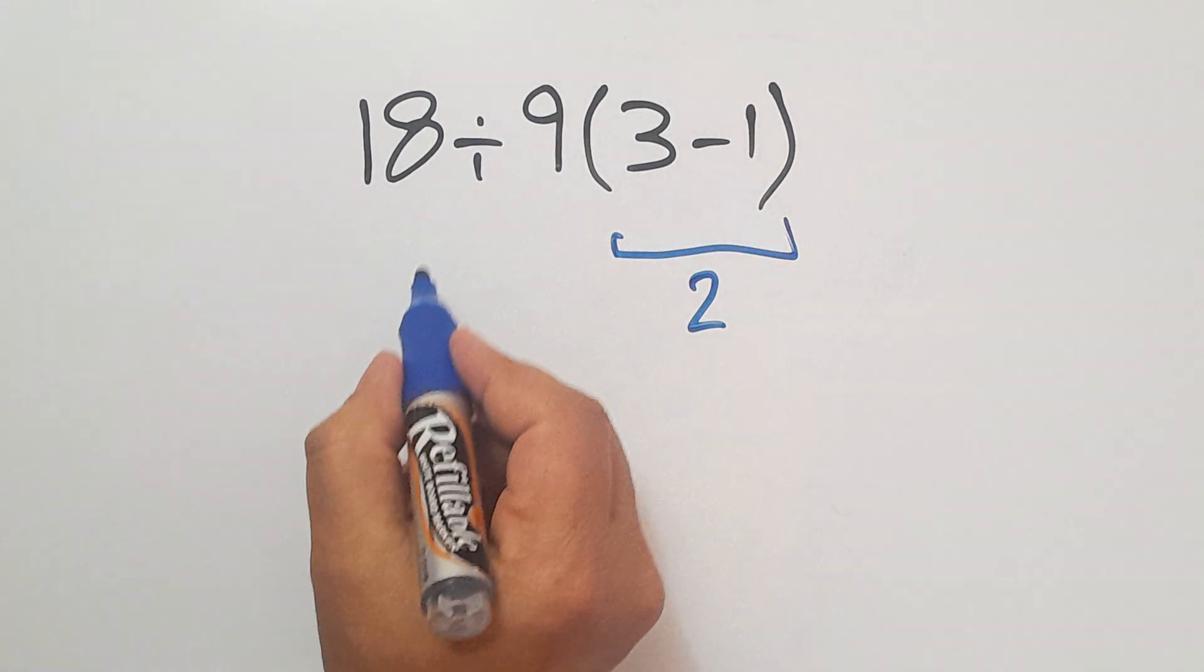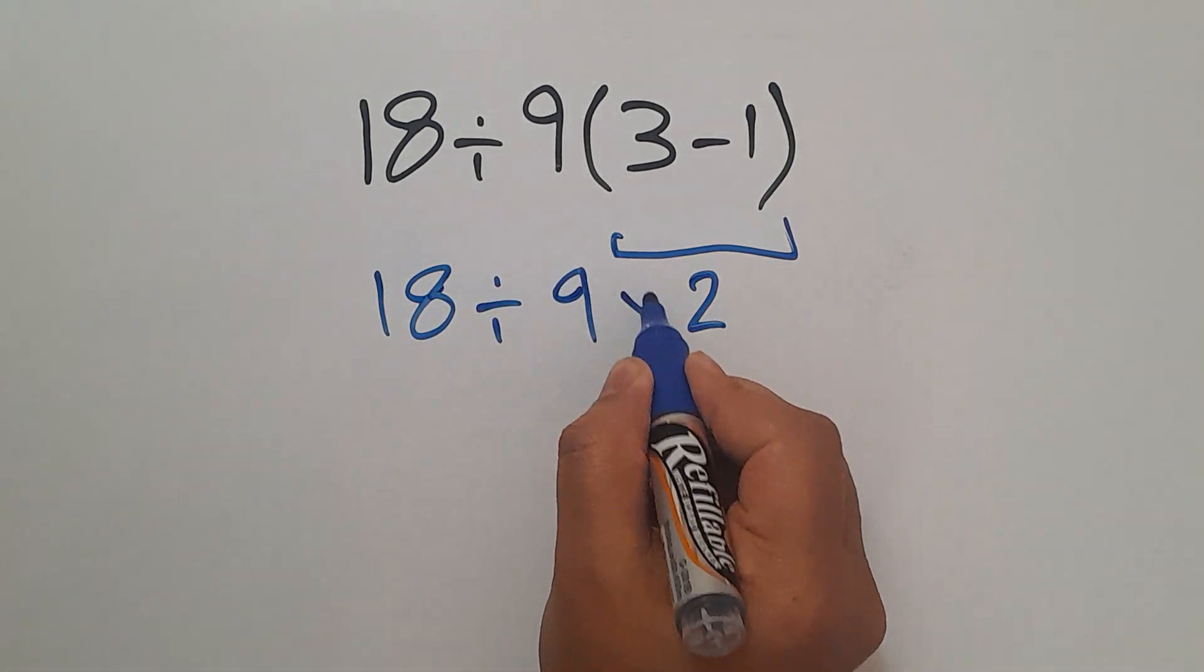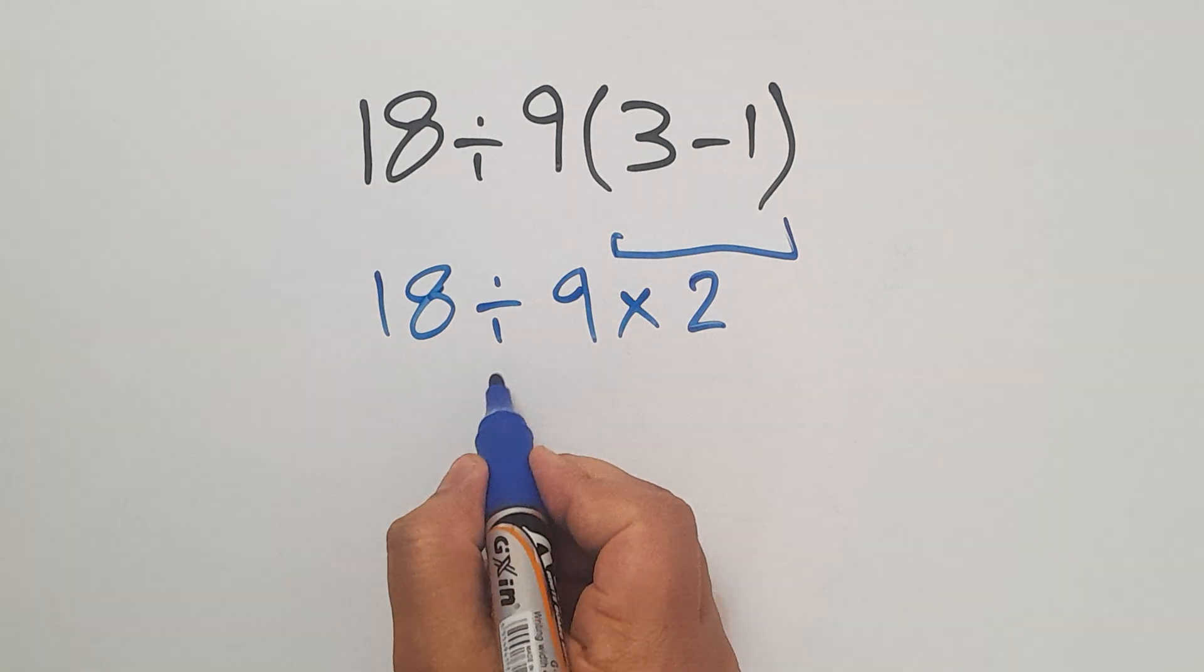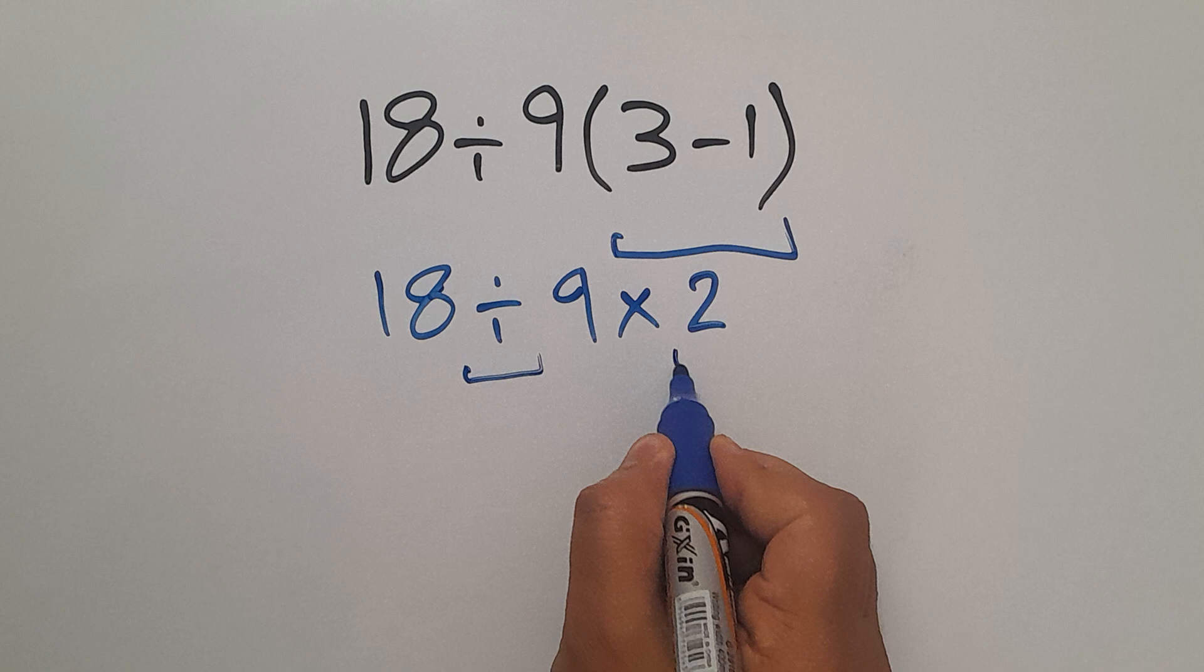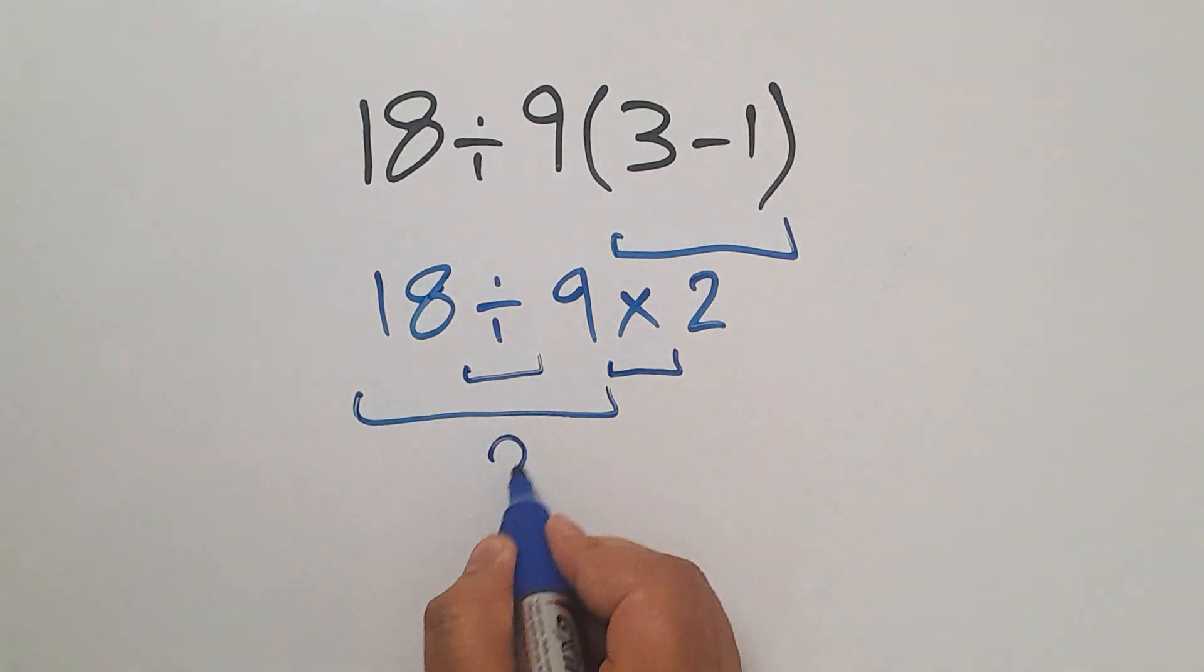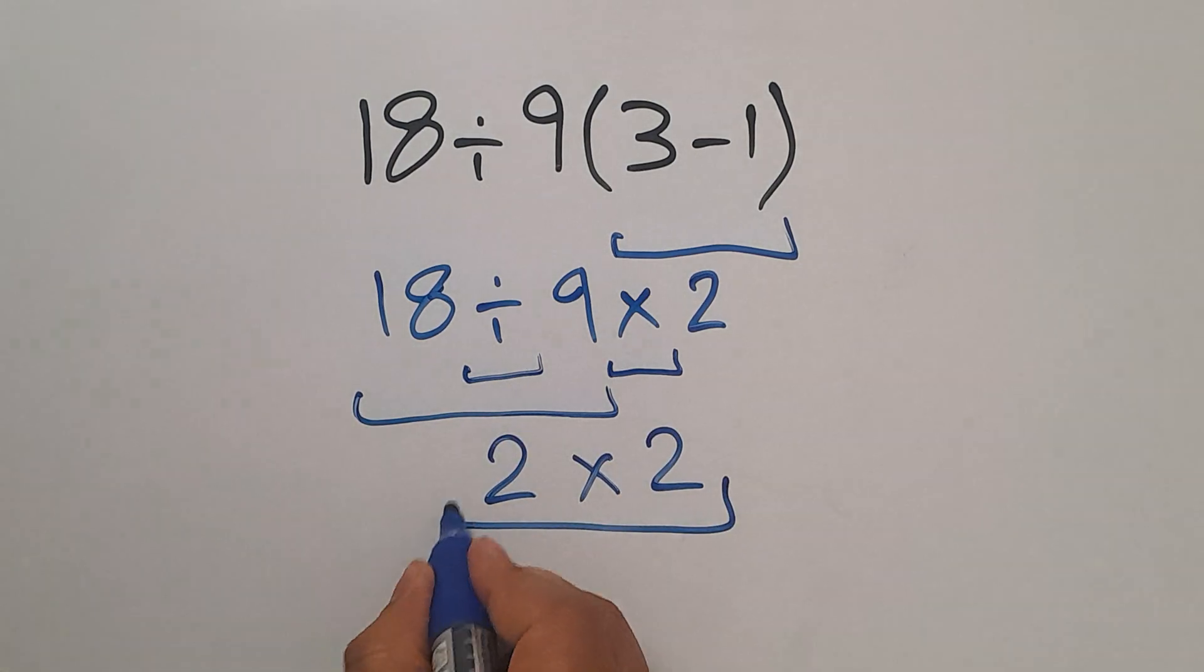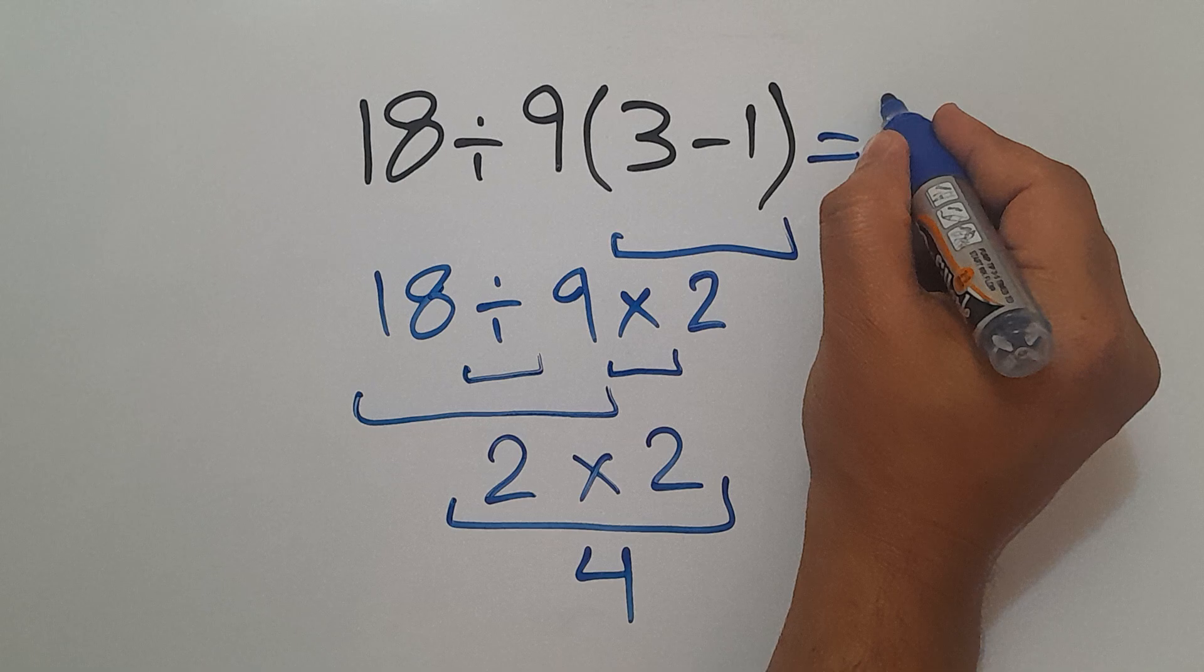And we have 18 divided by 9, then times 2. Here first we have to calculate this division before this multiplication. So 18 divided by 9 equals 2, then times 2 gives us 4. So the correct answer to this problem is 4.